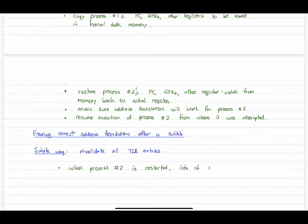When process number two is restarted now, initially after we invalidate everything, we'll have lots of TLB misses, but we'll also start building up translations from the process's page table as we go.